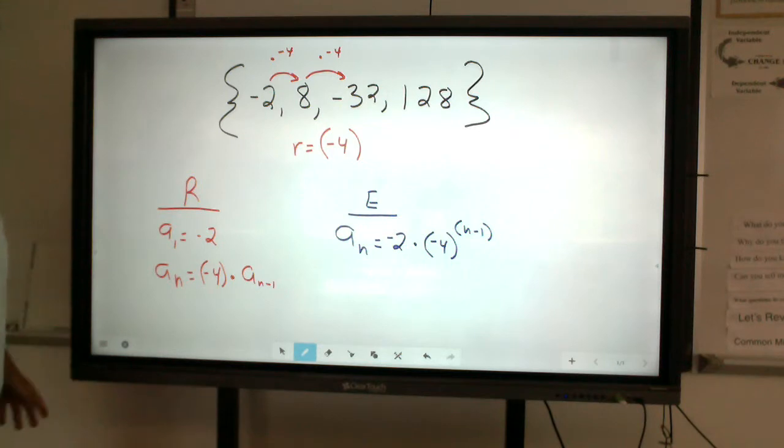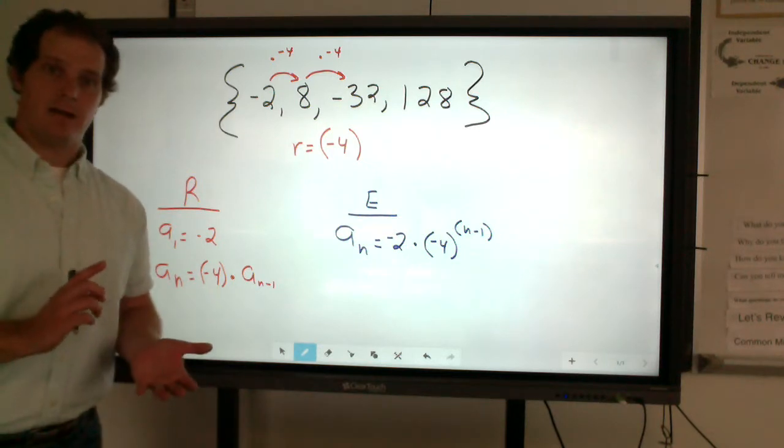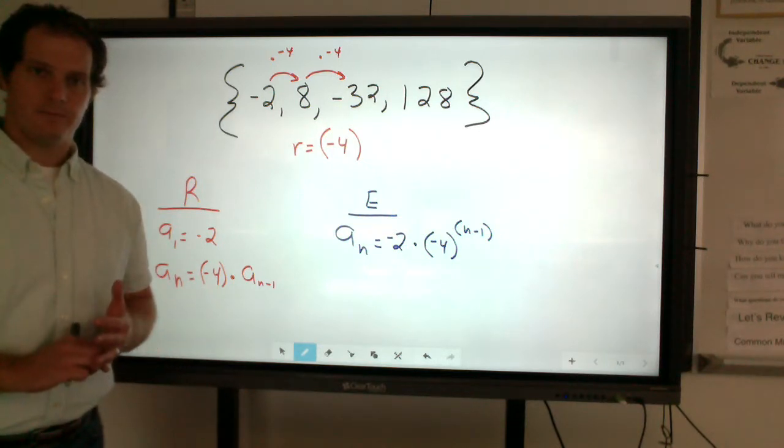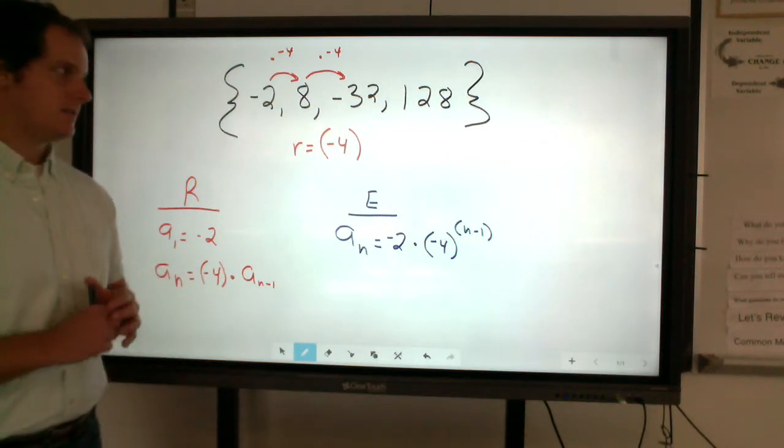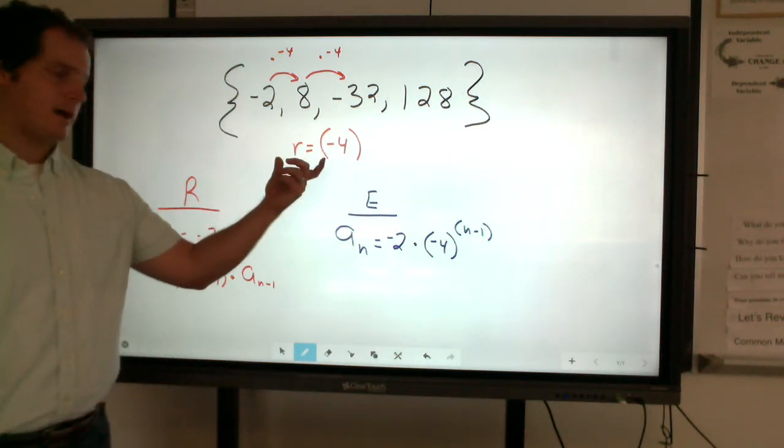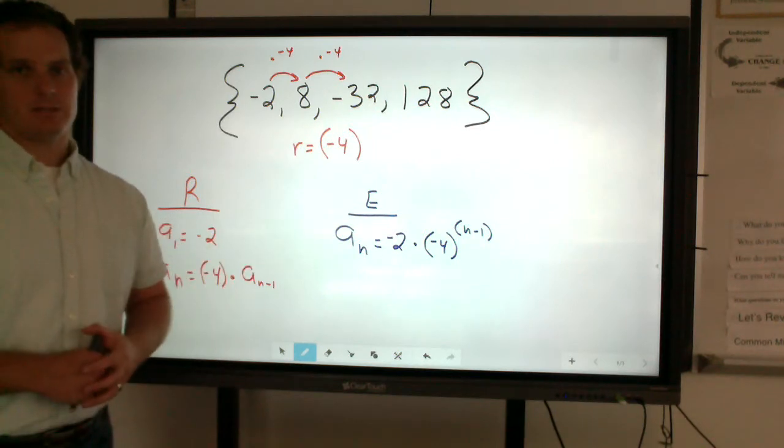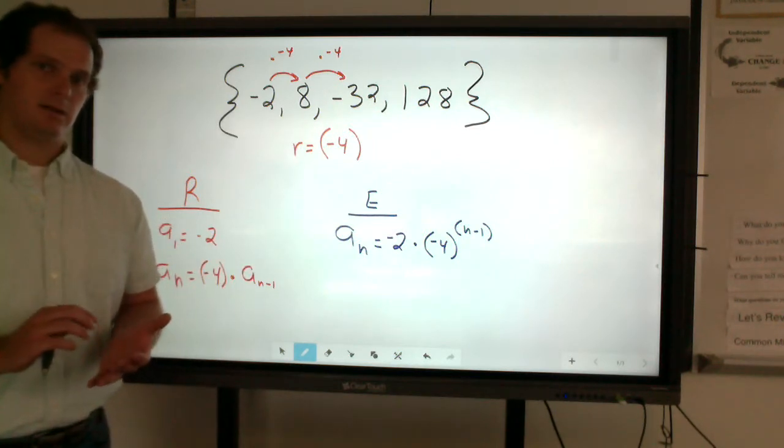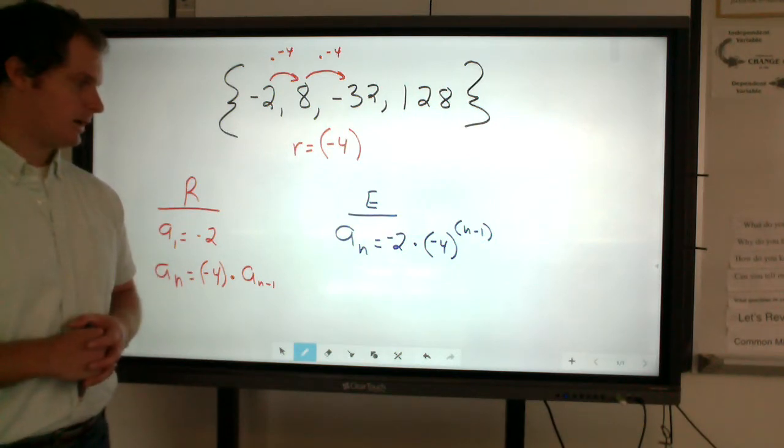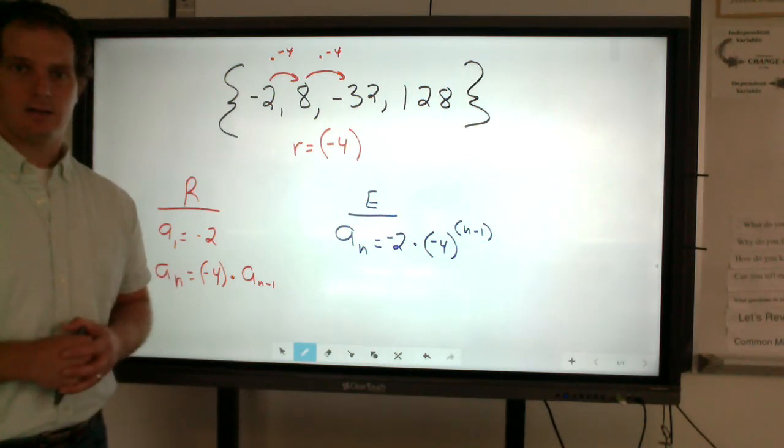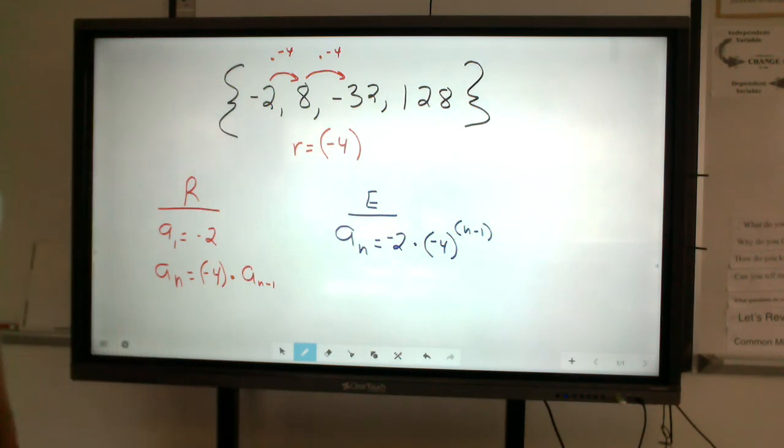So this is a breakdown of the difference between writing your geometric sequences as either recursive or explicit. Some things to keep in mind, though, look for that common ratio. If there is a common ratio, it could be negative, it could be positive, it could be a fraction. But just keep that in mind. I hope this helped, and keep working at it. Thank you.